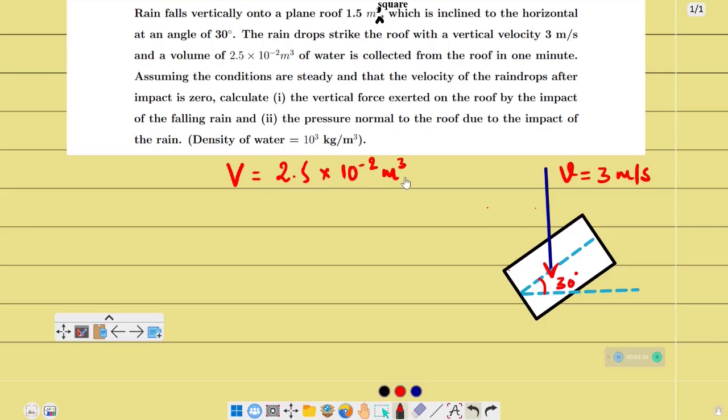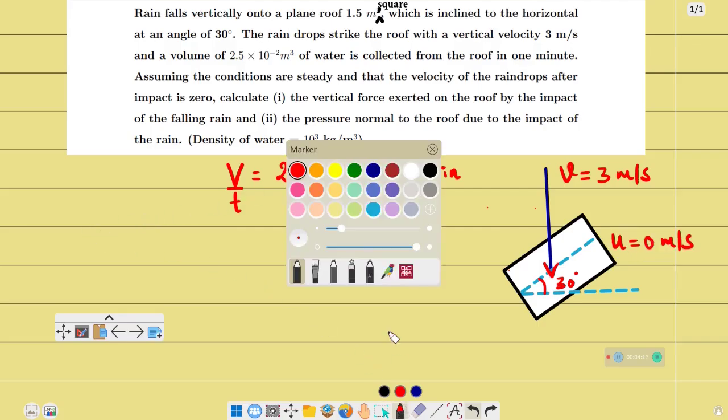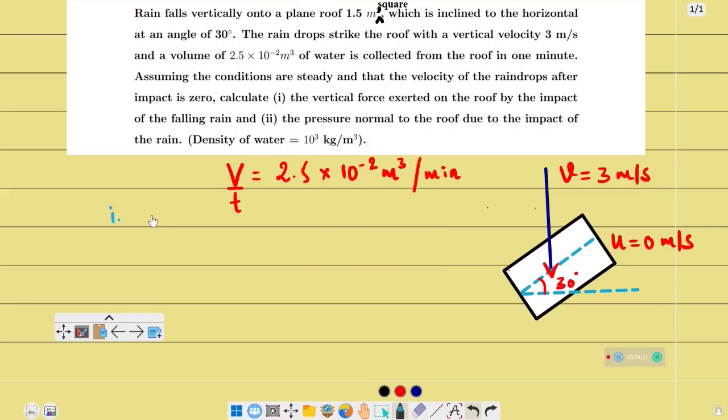Assuming the conditions are steady and the velocity of the raindrops after impact is zero, the final velocity is zero meters per second. The first question asks: what is the vertical force exerted on the roof by the impact of the falling rain? And the second question: what is the pressure normal to the roof due to the impact of the rain?